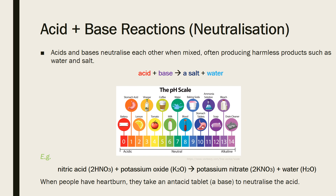The second acid reaction we're going to look at is what happens when you add an acid to a base. Looking at the pH scale again, we have an acid combined with an alkaline chemical, and when that happens they balance each other out and you get a neutral chemical being produced, which in this case is water.